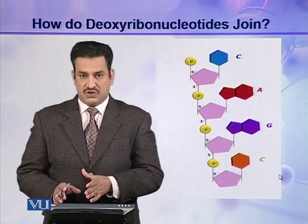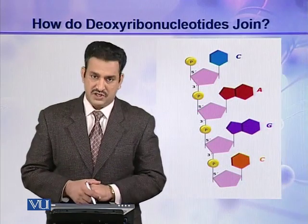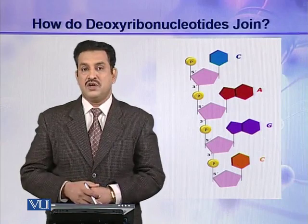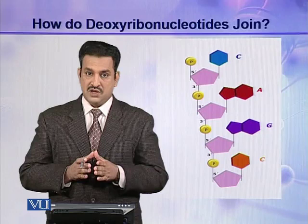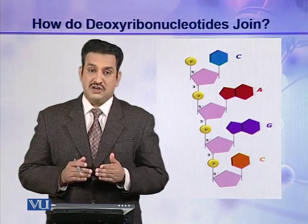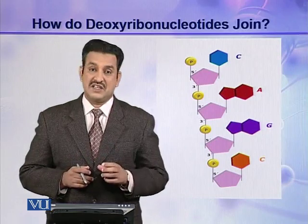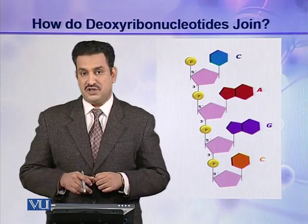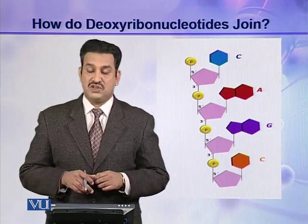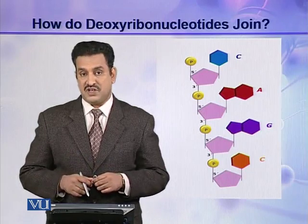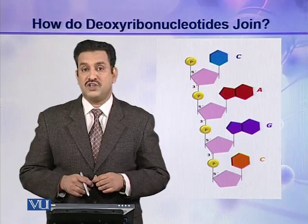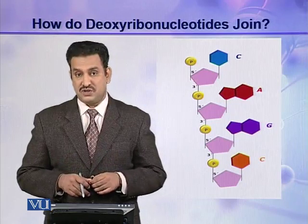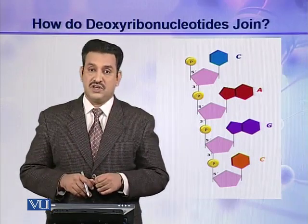This is a polynucleotide chain where the nucleotides are linked together through phosphodiester linkage. If a chain contains 50 or fewer deoxyribonucleotides, it is called an oligonucleotide chain. If the chain contains more than 50 deoxyribonucleotides, it is called a polynucleotide chain. As you know, DNA is a polynucleotide chain, and in this way a polynucleotide chain is formed.